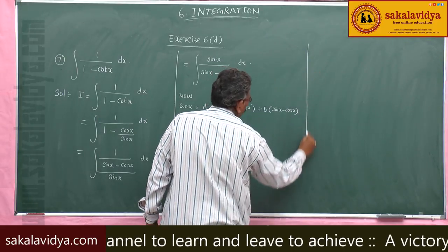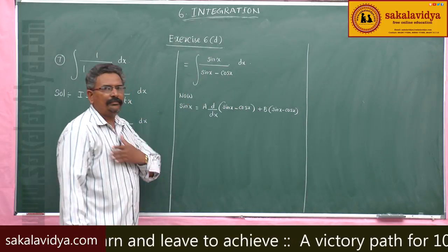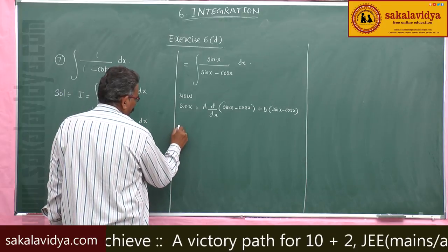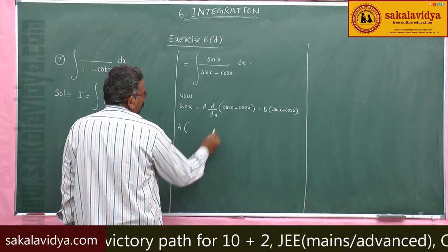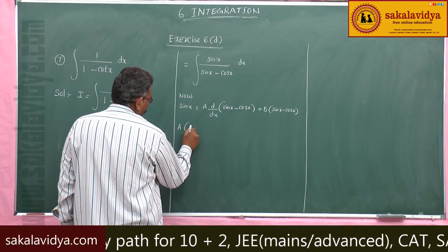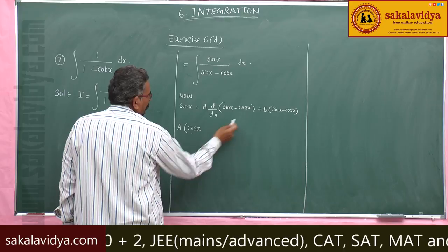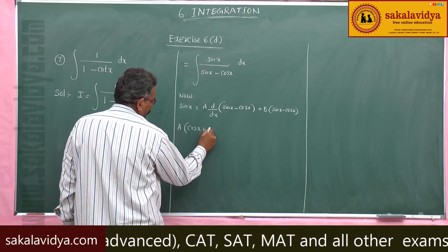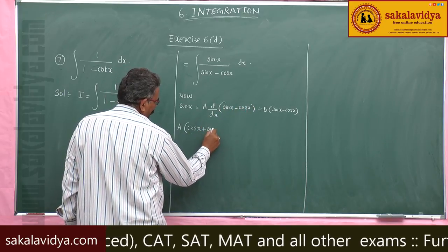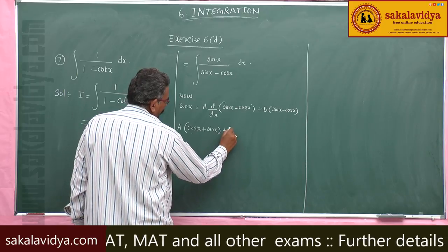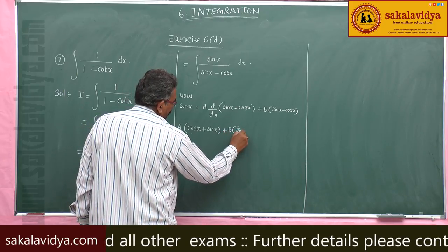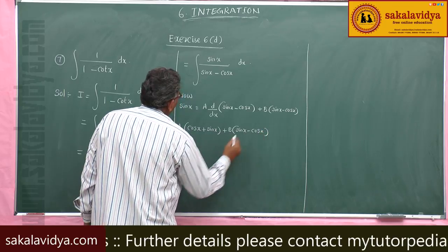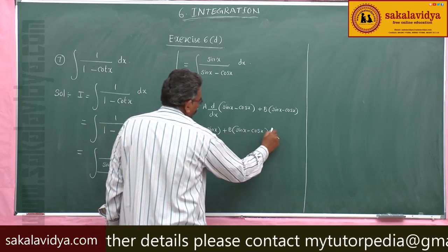We have to find A and B values first. A times the derivative: d/dx(sin x) = cos x, d/dx(-cos x) = sin x. So we get A(cos x + sin x) + B(sin x - cos x) = sin x.